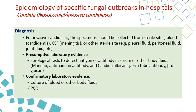For invasive candidiasis, specimens should be obtained from sterile body sites depending on the type of infection. For Candidemia, you get blood; for meningitis, CSF; for peritonitis, peritoneal fluid; for lung infection, pleural fluid. Presumptive lab evidence includes tests detecting antigen or antibody in serum, such as Mannan and anti-Mannan antibody, Candida albicans germ tube antibody, and beta-D-glucan test. Confirmatory testing depends on culture of blood and other sterile body sites or PCR.